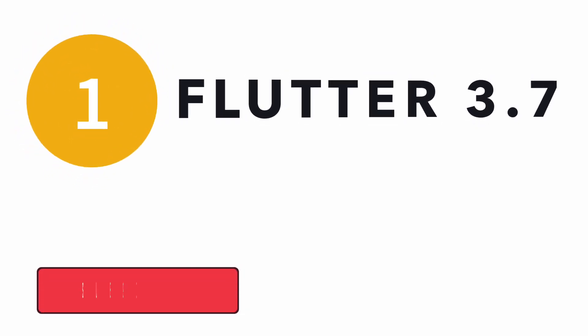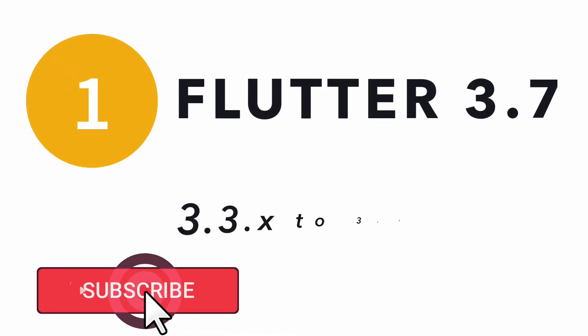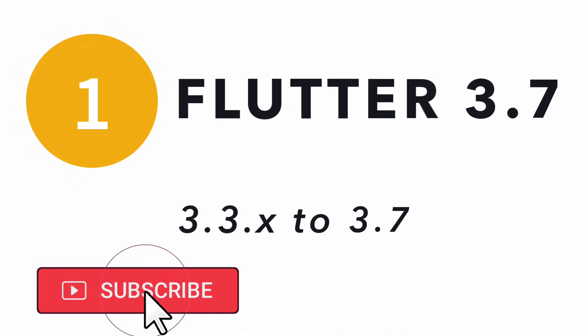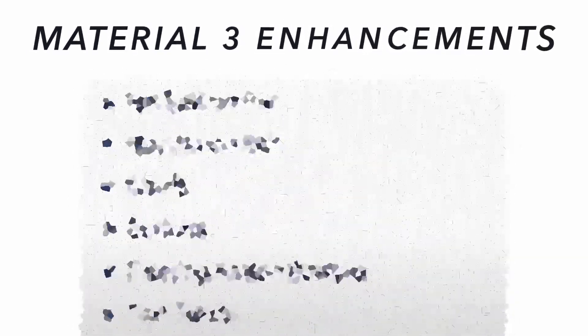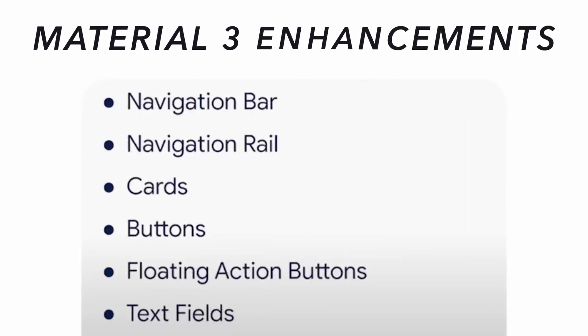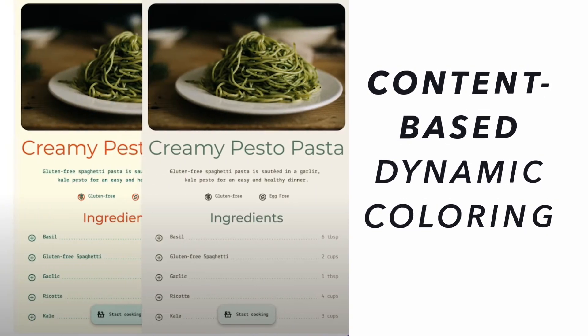Flutter 3.7 is a major update from Flutter 3.3.x because it contains many updates. First and foremost is the Material 3 Enhancements — you get a plethora of Material 3 widgets. The main highlight of Material 3 was dynamic coloring, which is now easily possible with theme extensions.